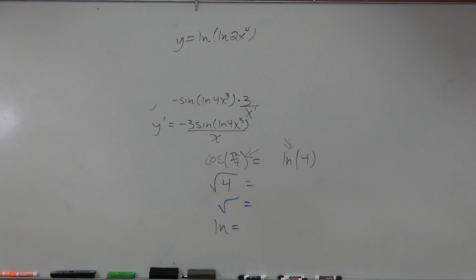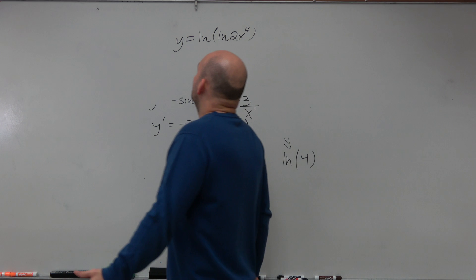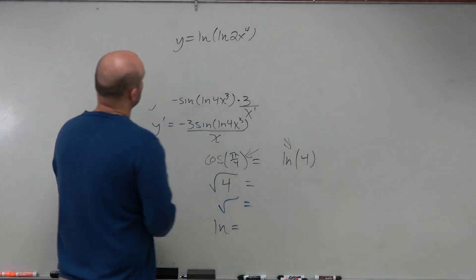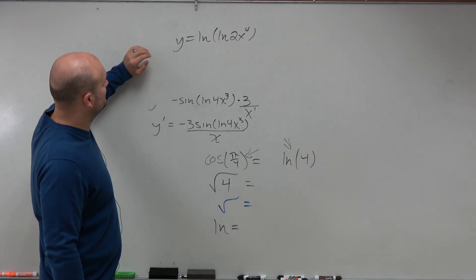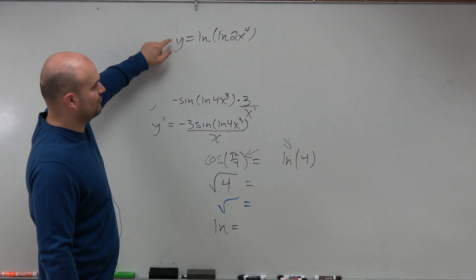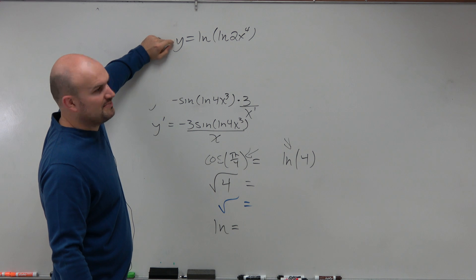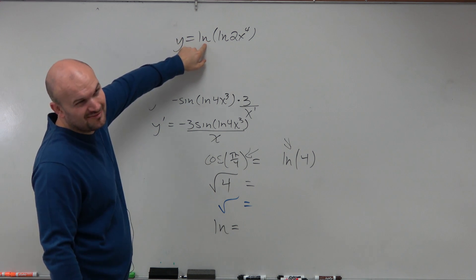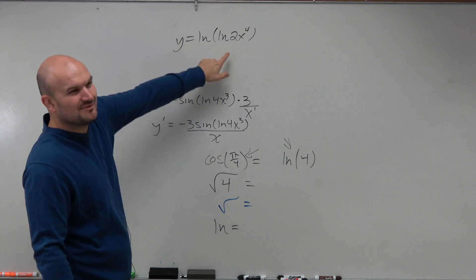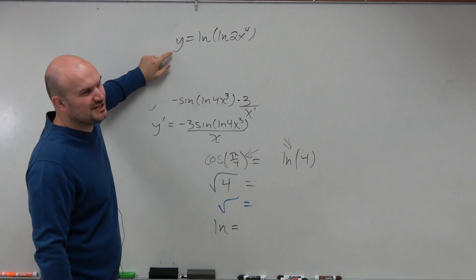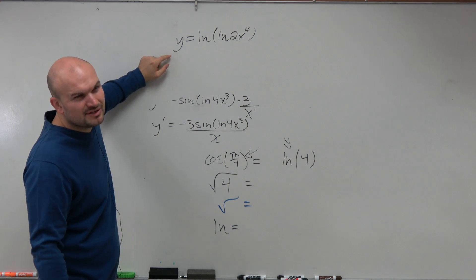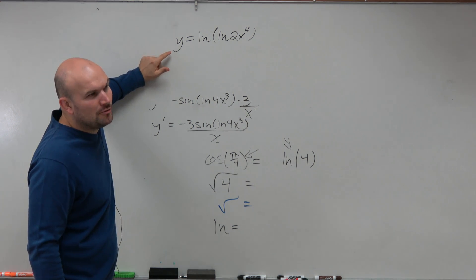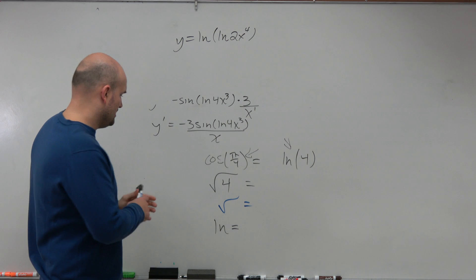So in this example, we could raise e to base e on both sides, right? But that would get rid of that logarithm. But then again, we still have a logarithm, and then we have to differentiate e to the y, which I don't think is really going to be helping us out in this example.